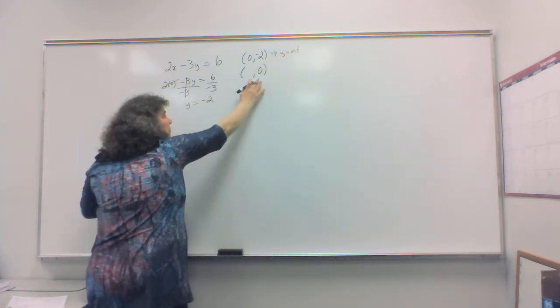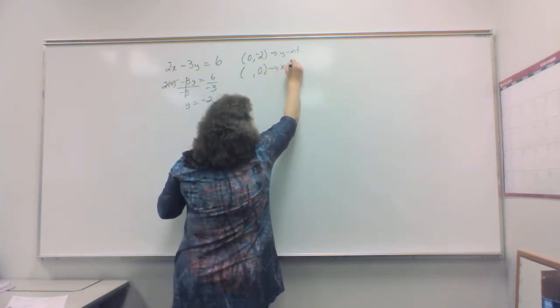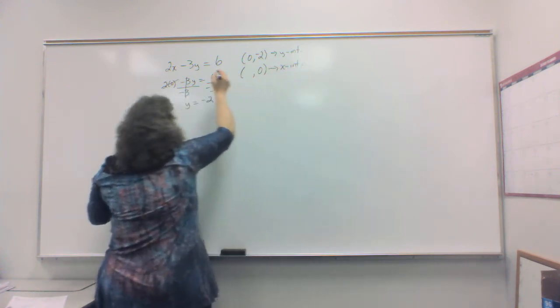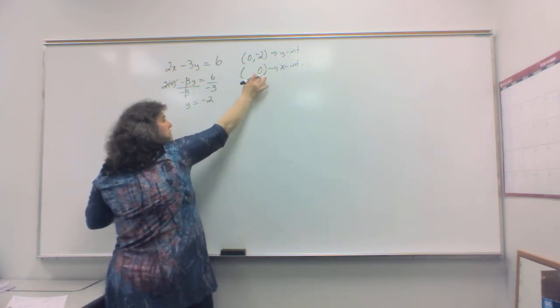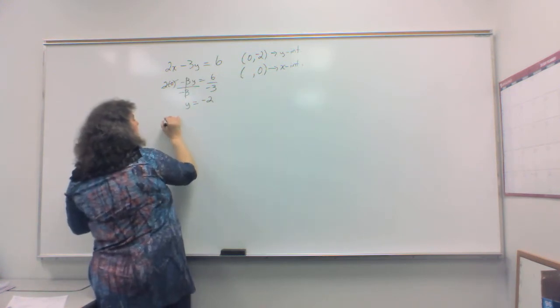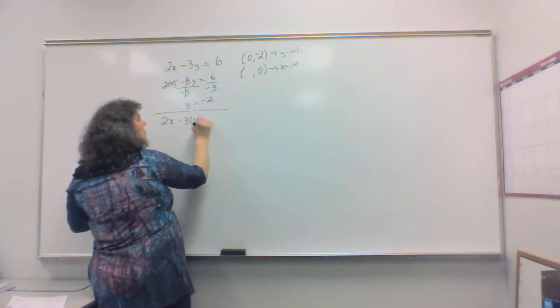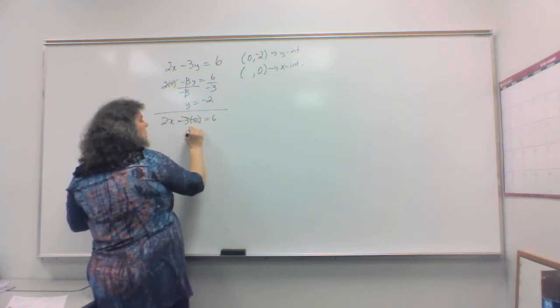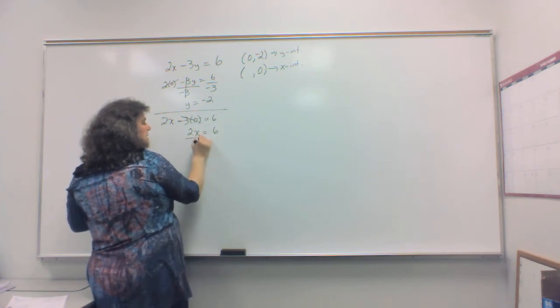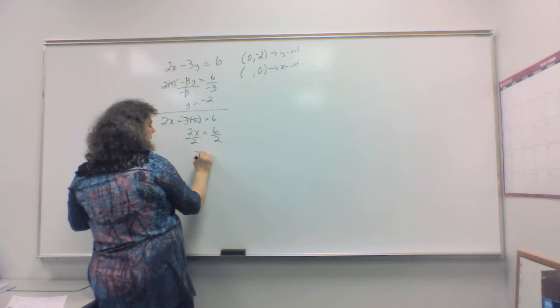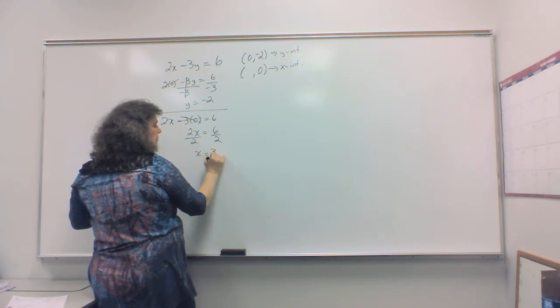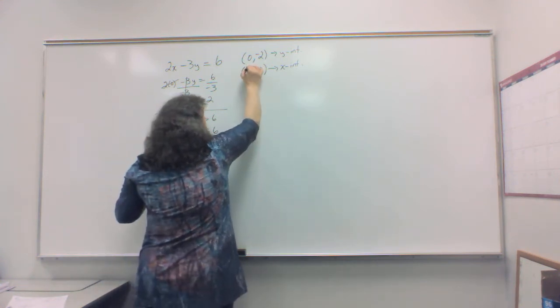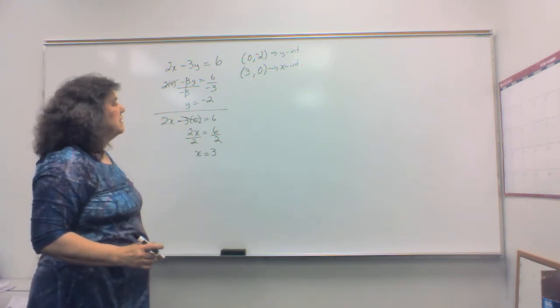The next one will build my x-intercept. So, I'm going to put 0 in for the y, because that's where the 0 is in my ordered pair. So, this gives me 2x minus 3 times 0 equals 6. Negative 3 times 0 is 0. And I'm left with 2x is equal to 6. Divide by 2. And x is equal to the number 3. Therefore, 3, 0 gives me my x-intercept.